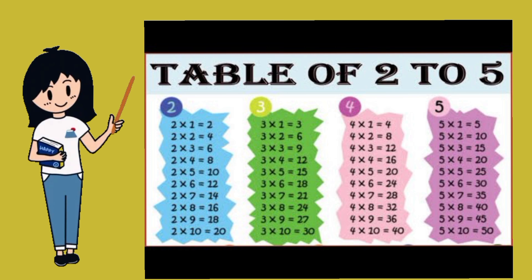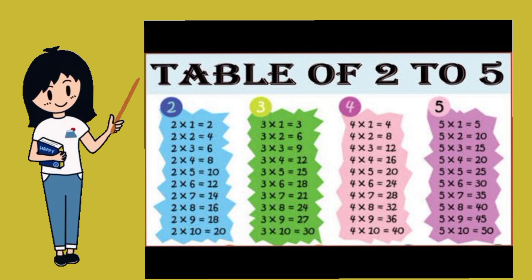Table of three. Three ones are three. Three twos are six. Three threes are nine. Three fours are twelve. Three fives are fifteen.